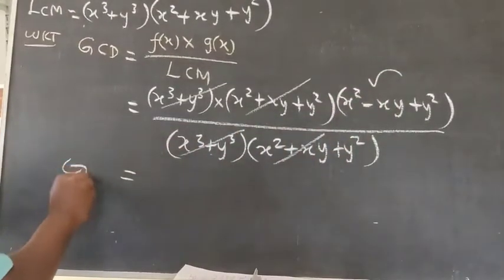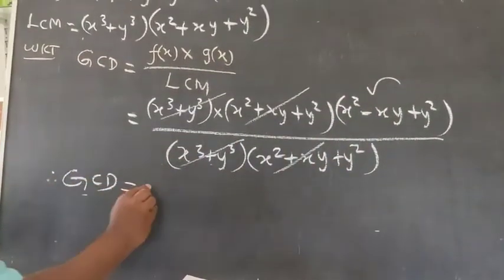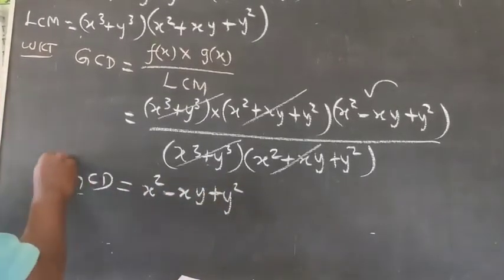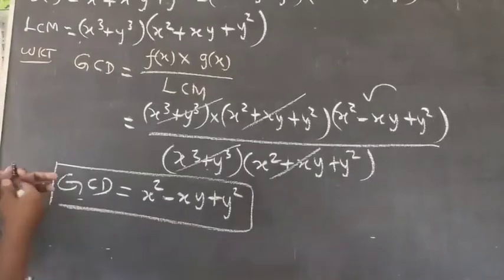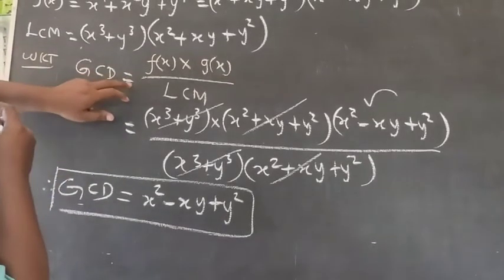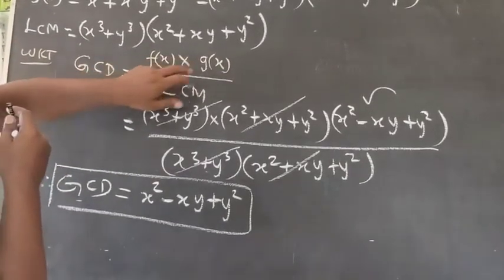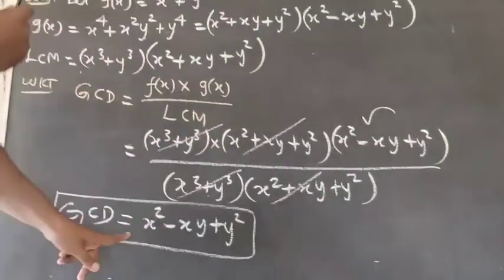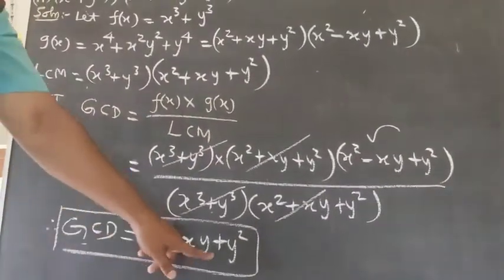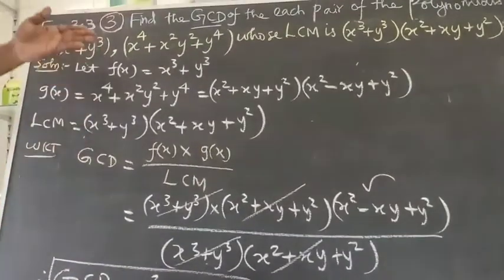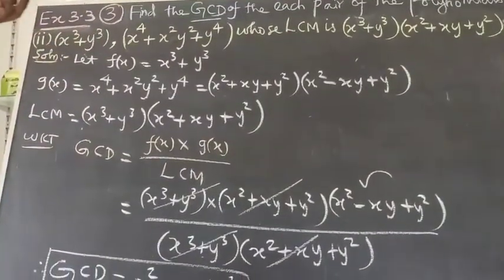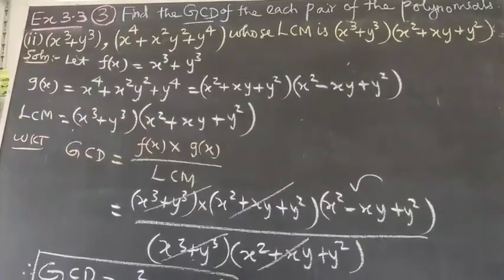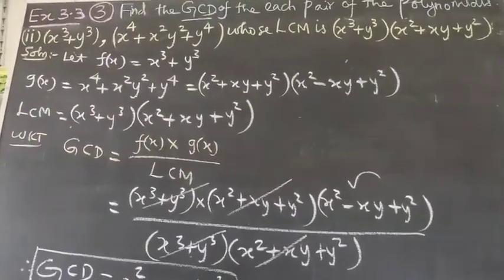Therefore, GCD is equal to X square minus XY plus Y square. That is the answer. Important question — understand it clearly and do not put a wrong answer. Thank you.